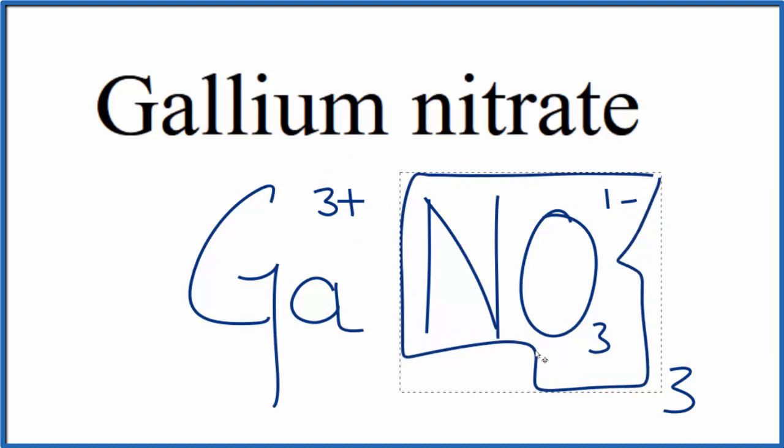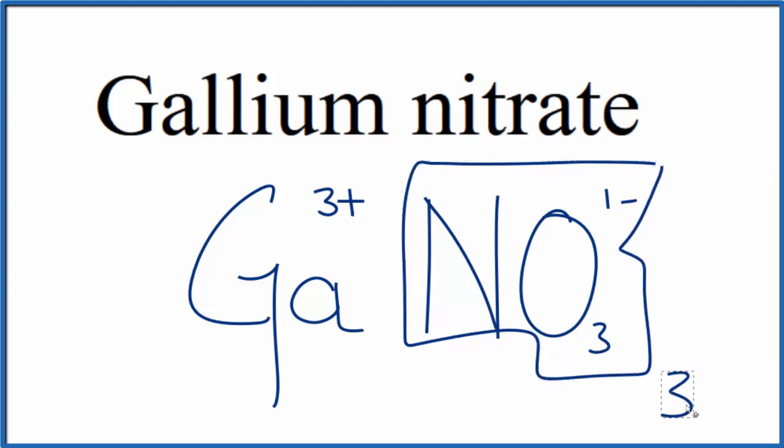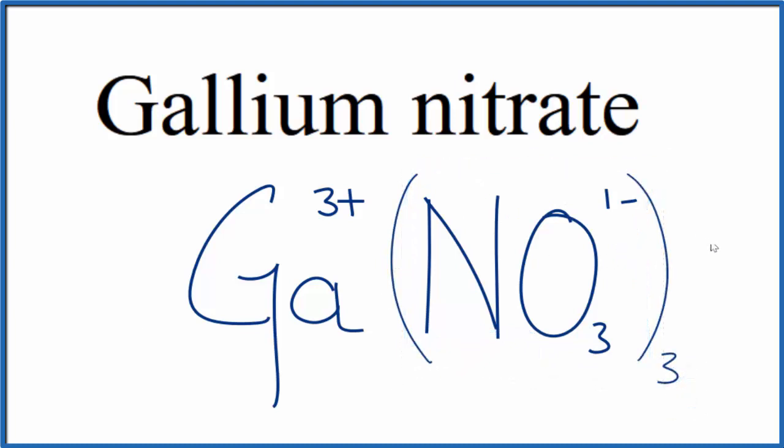We need to put parentheses around the nitrate ion since we have 3 of them. And then let's get rid of these symbols here. And this is the formula for gallium nitrate, Ga(NO3)3.